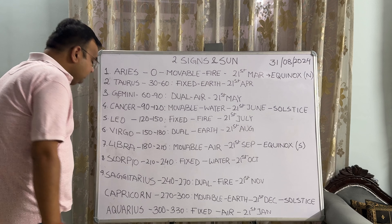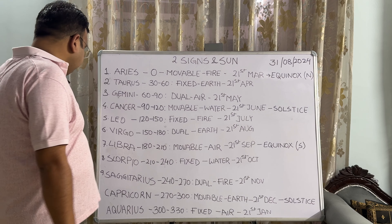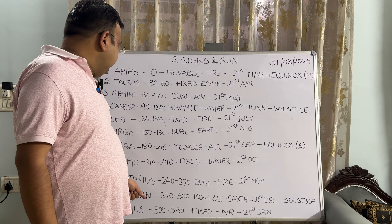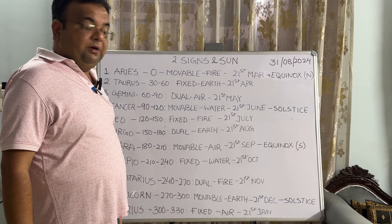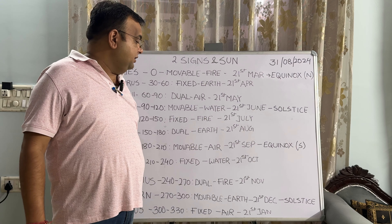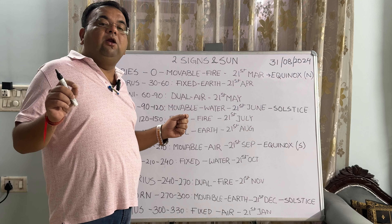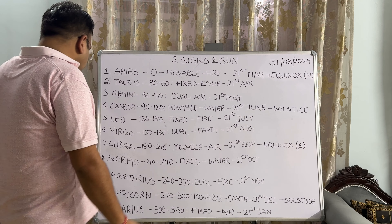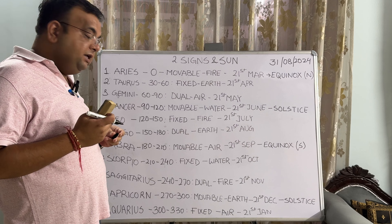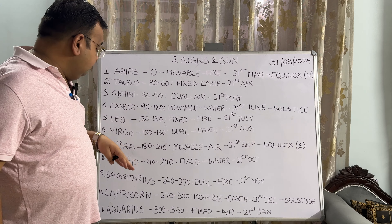The ninth sign is Sagittarius. It ranges from 240 degrees to 270 degrees, dual in nature, and the sun enters it on the 21st of November. The tenth sign is Capricorn. It extends from 270 degrees to 300 degrees, movable in nature, and the sun enters it on the 21st of December, which is again a solstice — meaning on this day the night is the longest and the day is the shortest. The eleventh sign is Aquarius, which extends from 300 degrees to 330 degrees, and the sun enters Aquarius on the 21st of January.